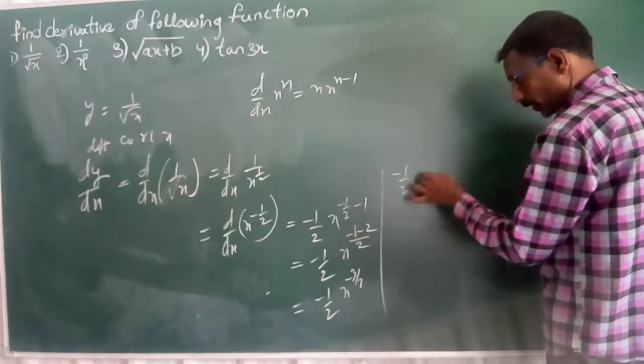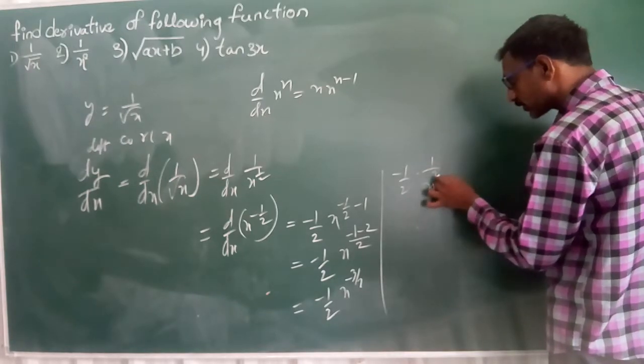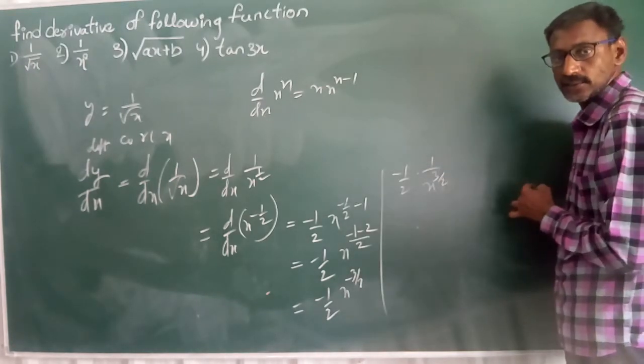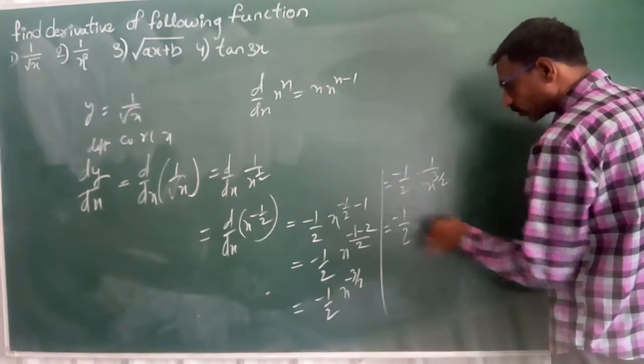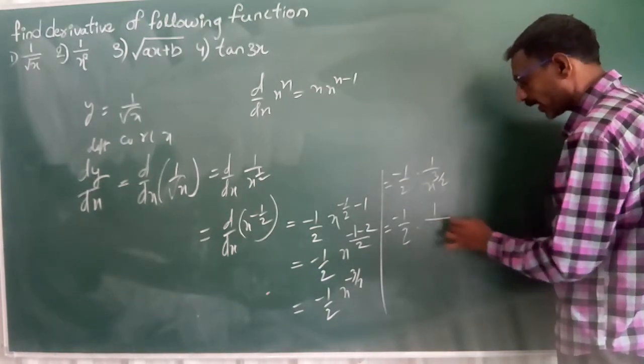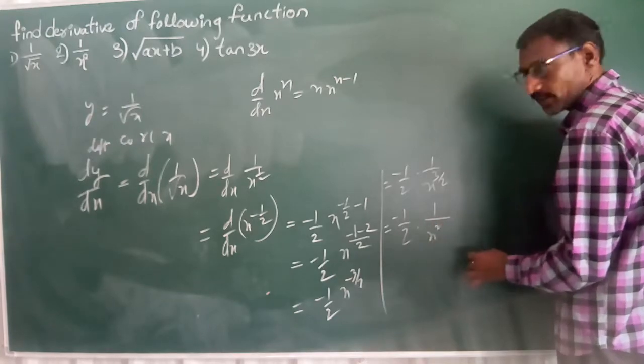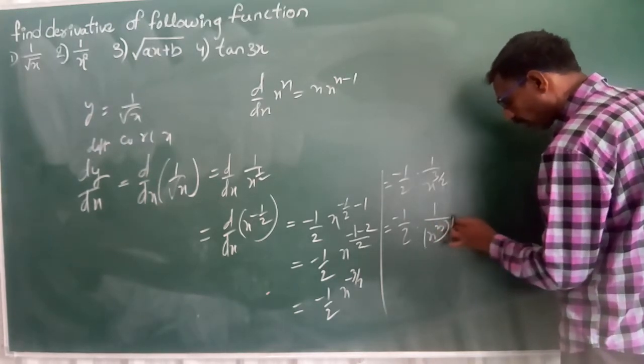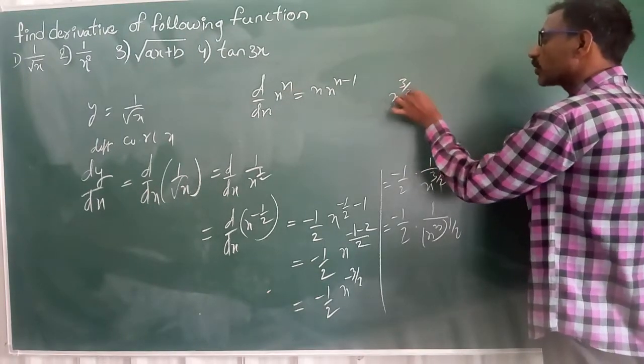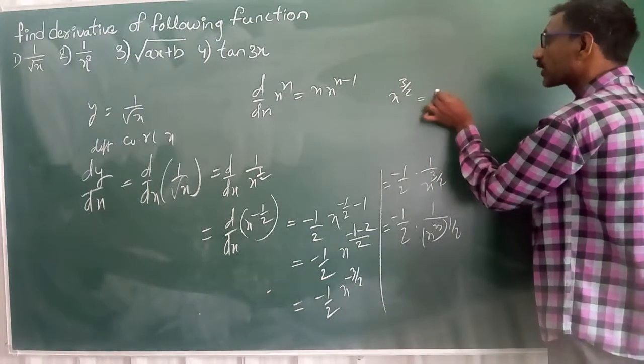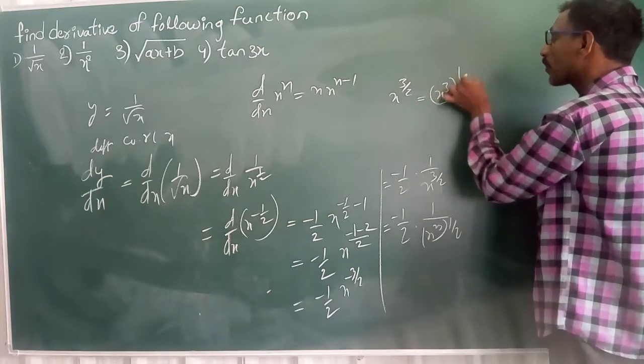This is minus 1 by 2 into 1 by x power 3 by 2. Can I write it like this? This is also we can write minus 1 by 2 into 1 by x cube to the power of 1 by 2. Can I write it like this? X power 3 by 2, this we can write as x power 3 over to the power of 1 by 2.